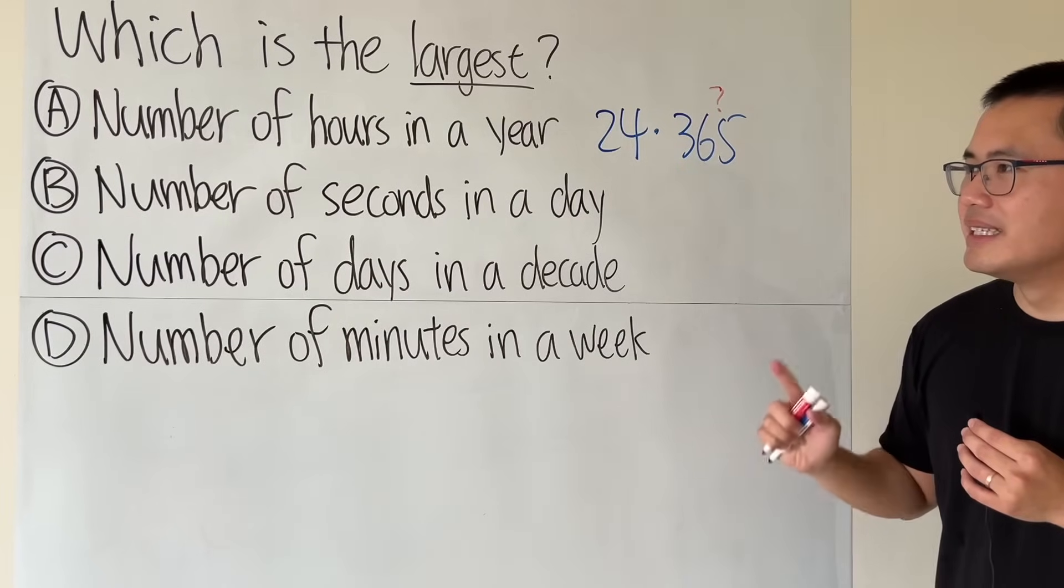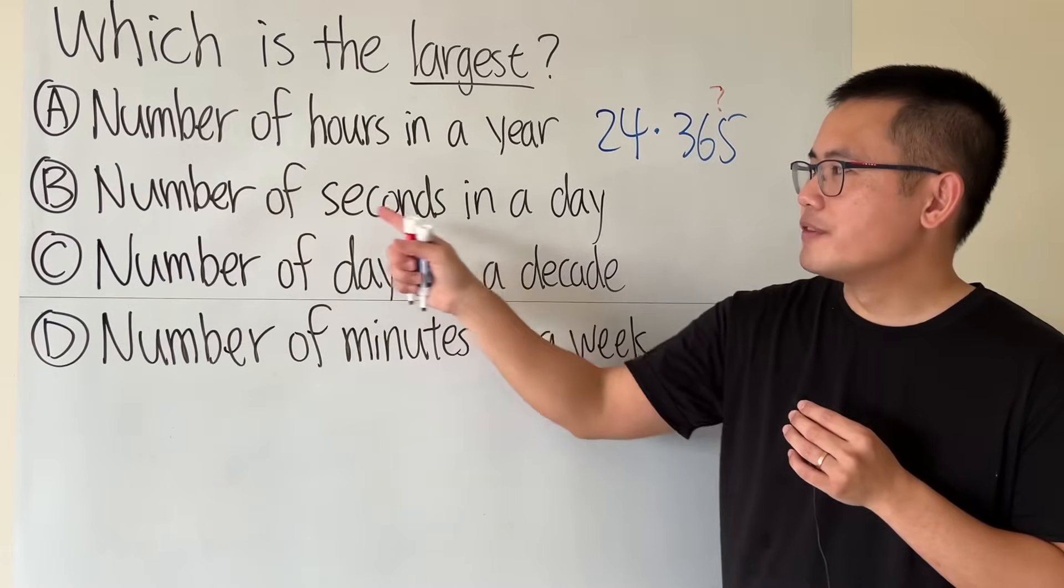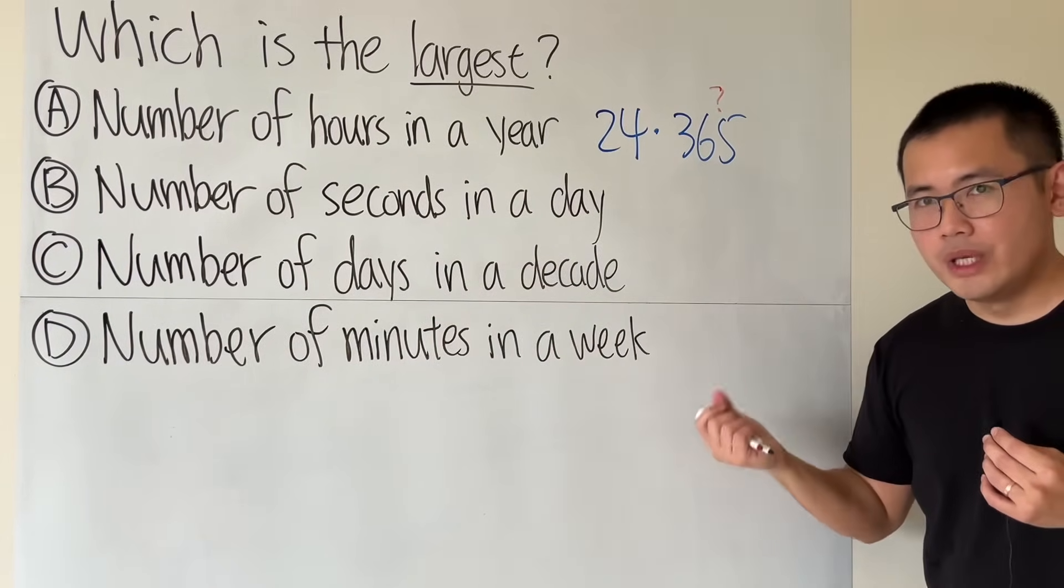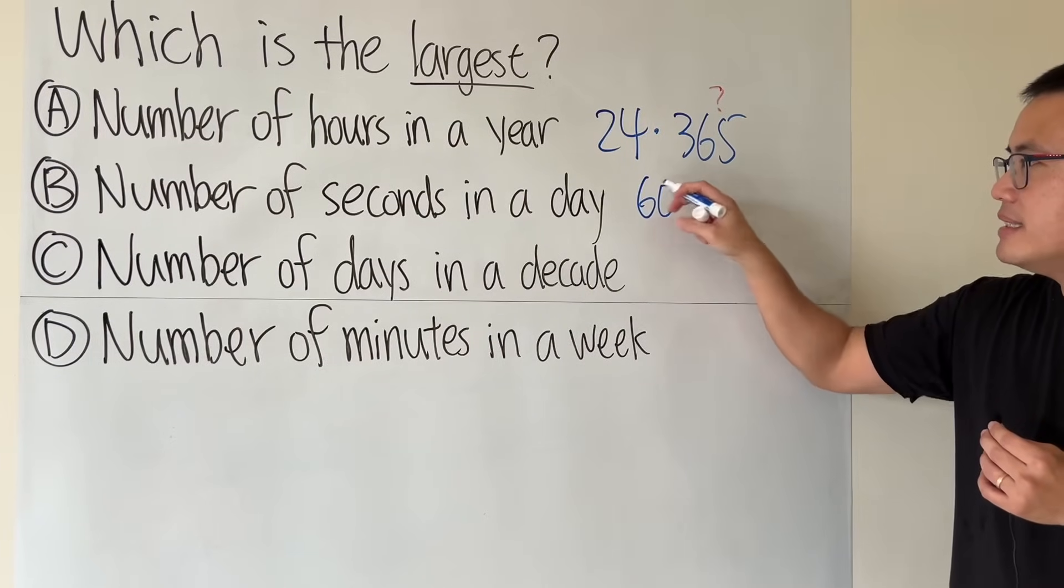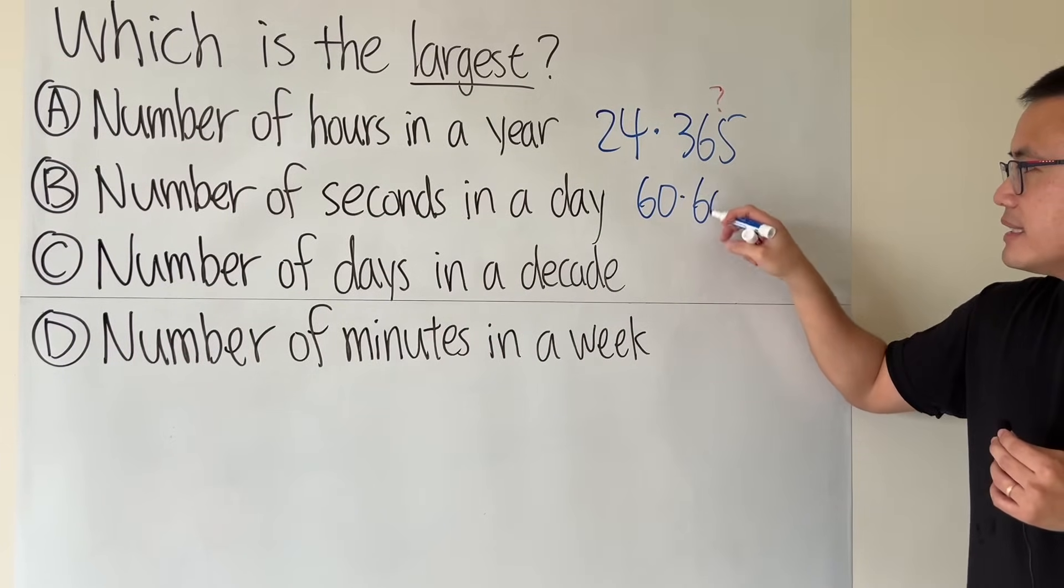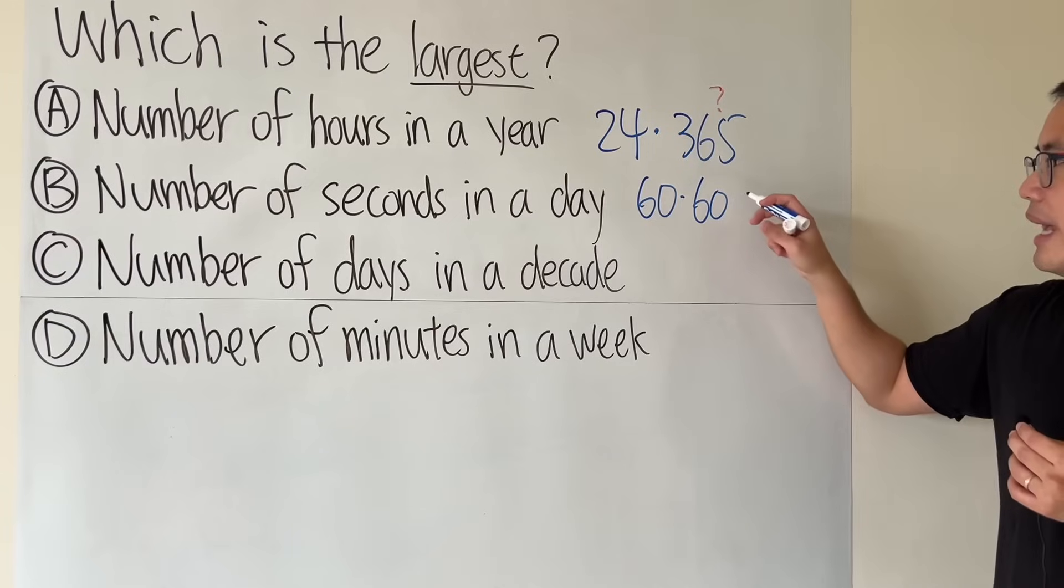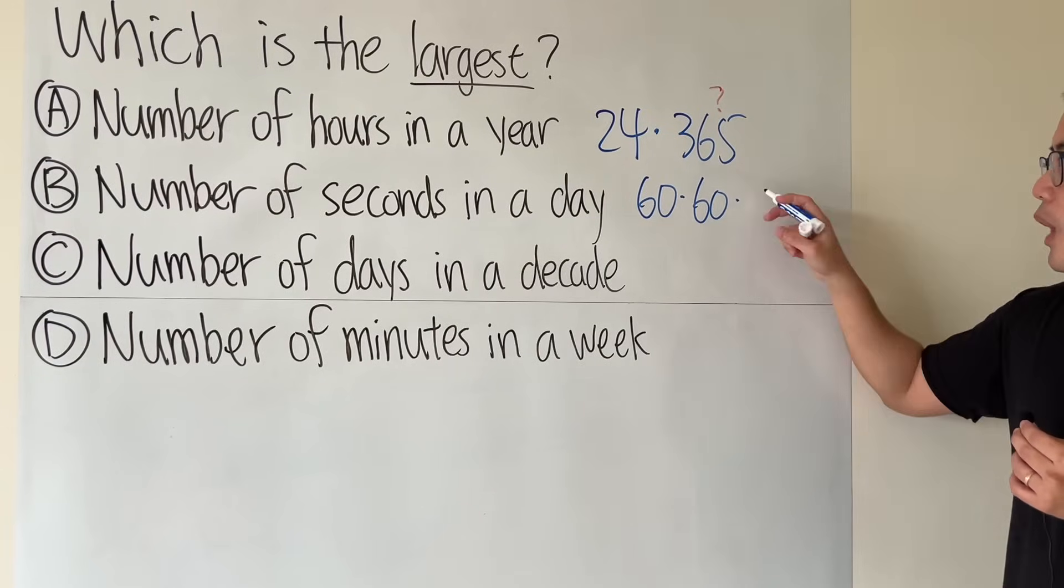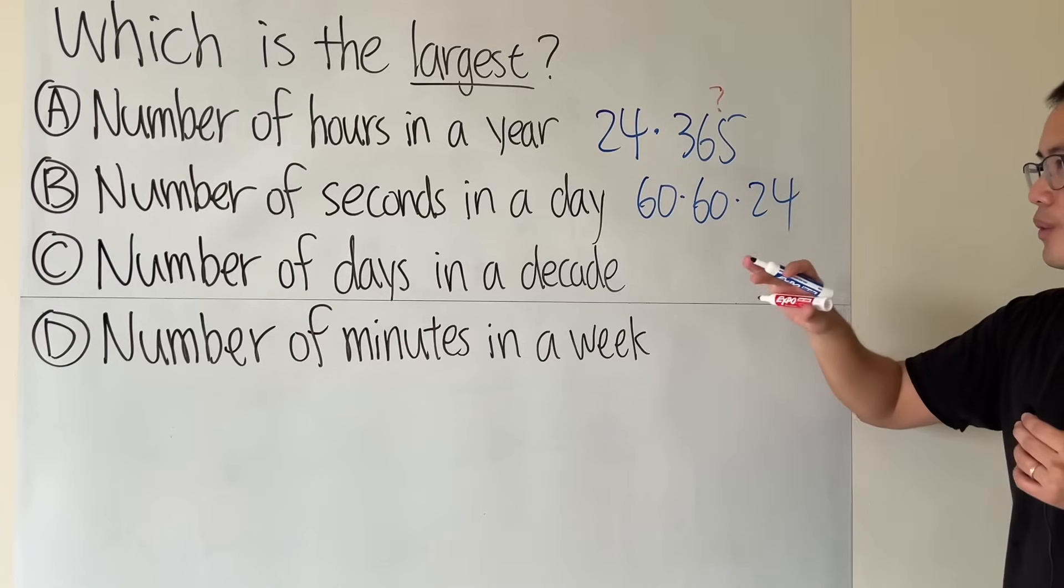Next, number of seconds in a day. We have 60 seconds in a minute, and then we have 60 minutes in an hour, and then we have 24 hours in a day. So this is what we have.